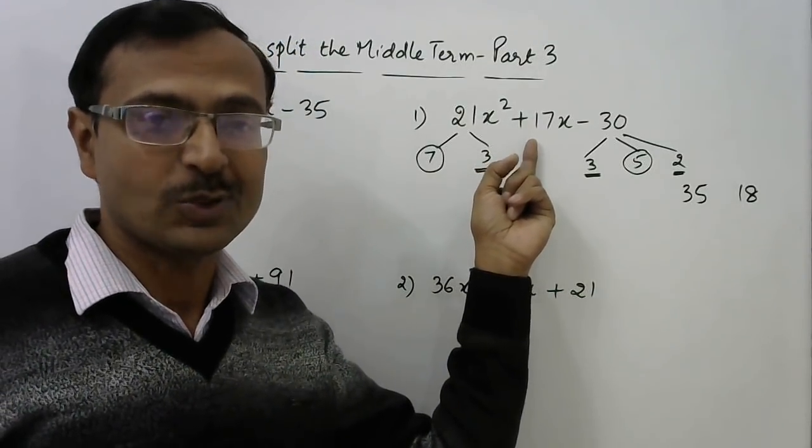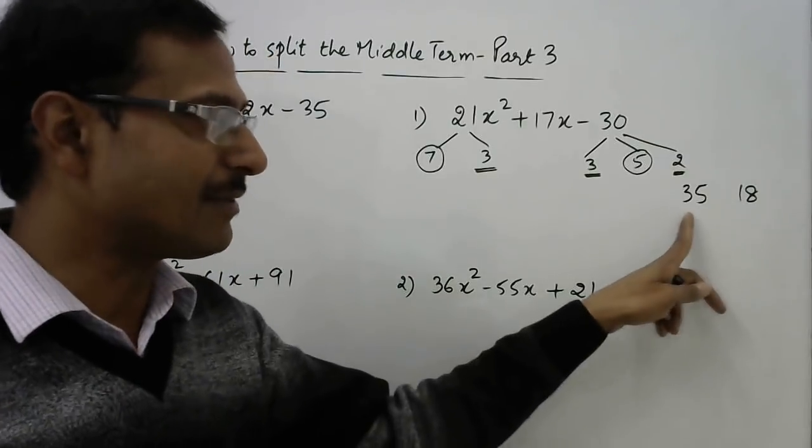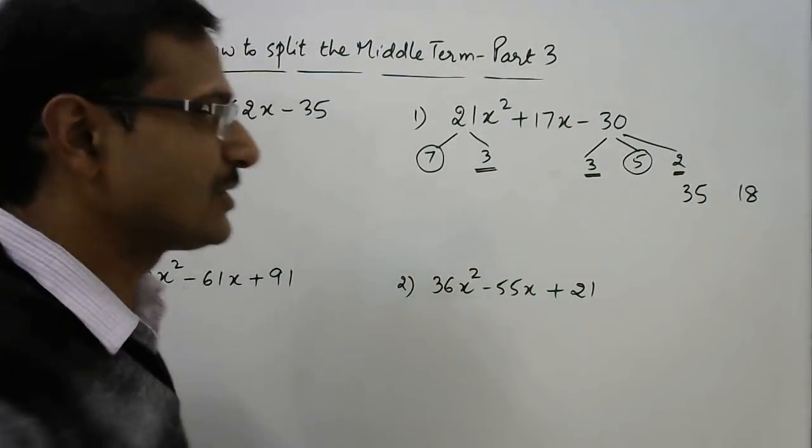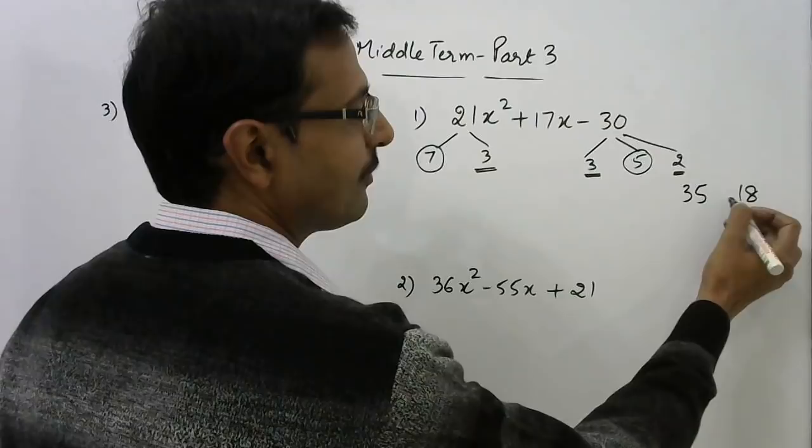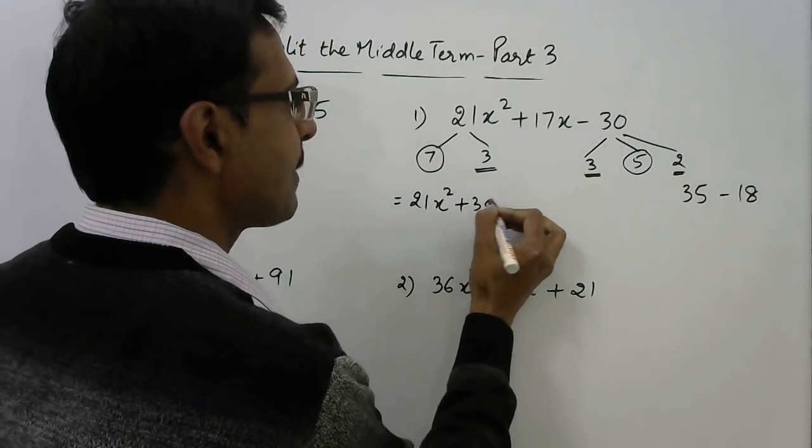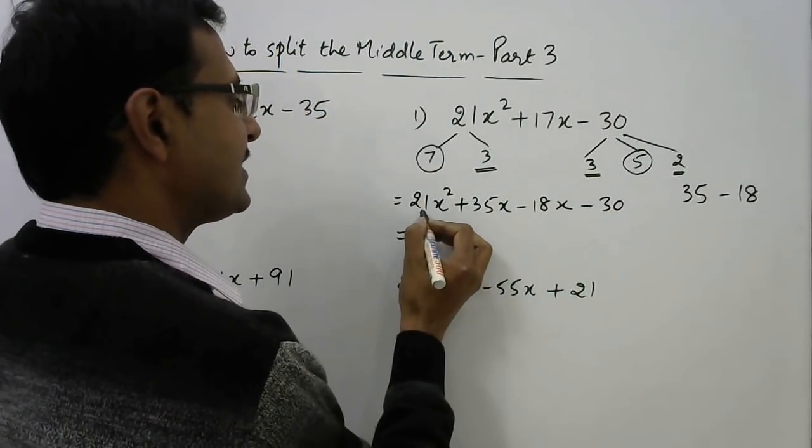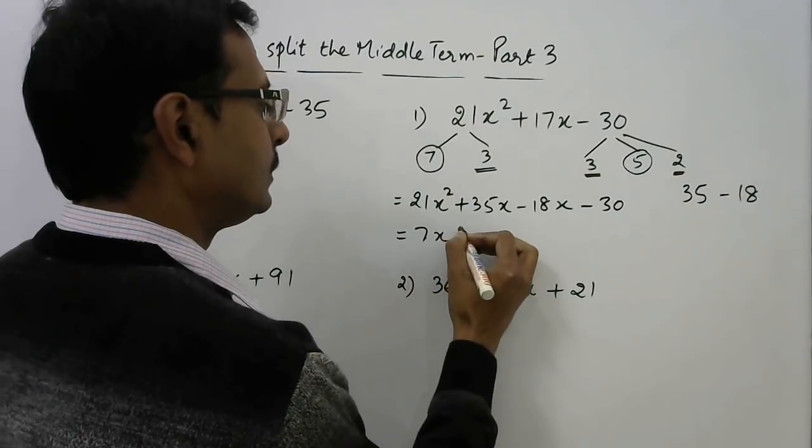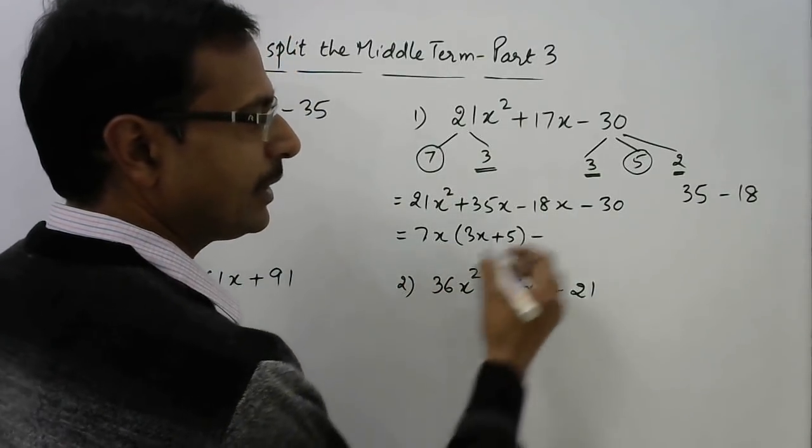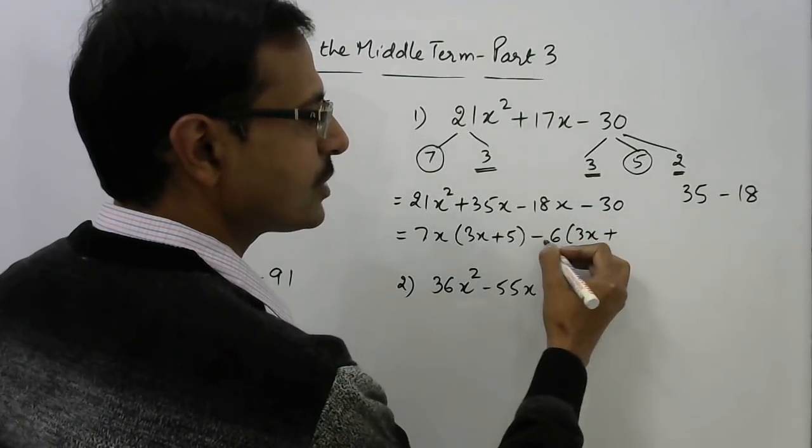Do you see that the difference of 35 and 18 is actually 17 which is the exact thing you require. The middle term coefficient is 17. So the two numbers which you have selected should either have a sum of 17 or have a difference of 17. So in this case our purpose is solved by just selecting the highest number from these factors and highest numbers from this factor. So 7 and 5 is 35, 3 into 3 into 2 is 18 and the difference is 17.